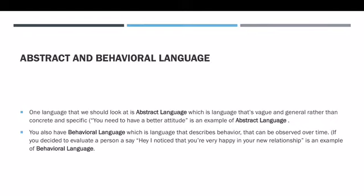You also have behavioral language, which is language that describes a course of behavior and also behavior that is observed over time. For example, if I evaluated a person and said, 'I noticed that you're very happy in your new relationship,' this is an example of behavioral language because I've been watching a certain individual for a certain amount of time and have assumed that they're sad or happy depending on what situation they're going through in life.